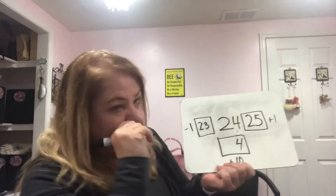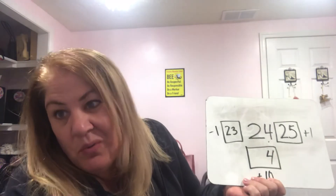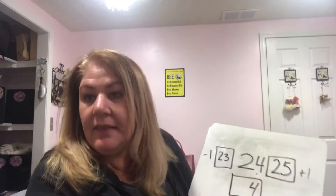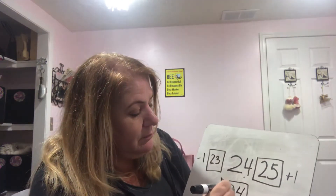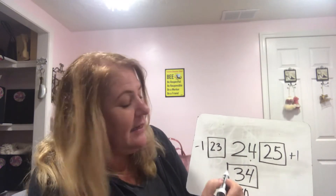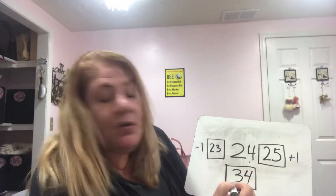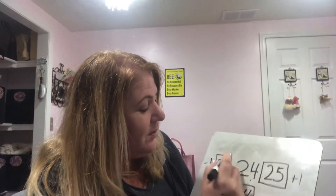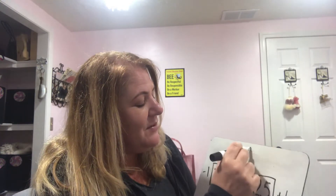What's 10 more than 24? I put it below because I know that's where it belongs on the hundred grid — plus 10. My four stays the same, it's still four ones. But what is 10 more than 20? Instead of two groups of 10, now I have three groups of 10. Ten more than 24 is 34.